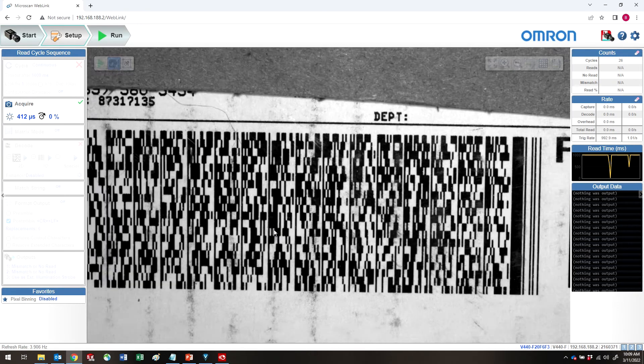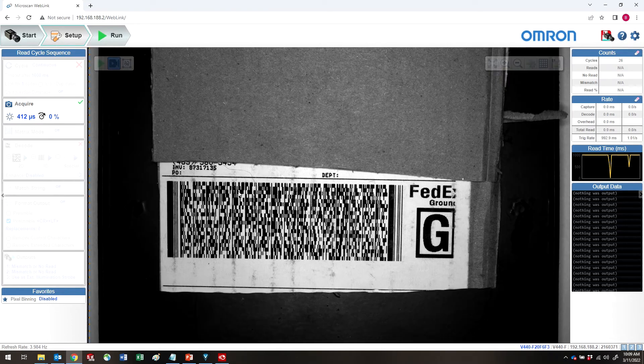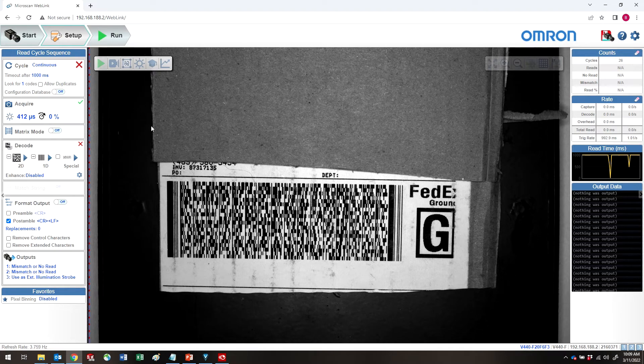You can zoom back out and turn off live view. Click on the same button again. And now the V440 is reading codes.